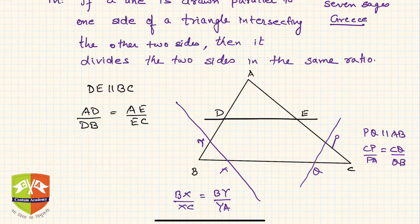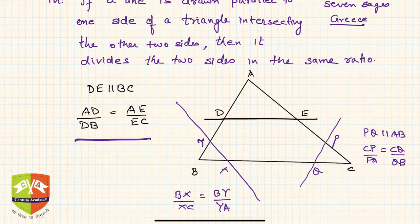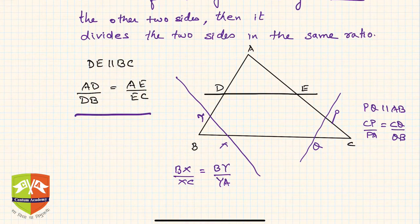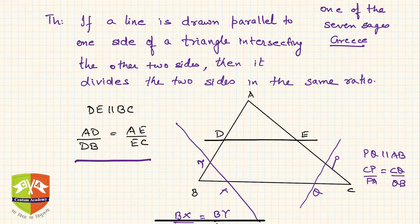So there are three possible parallel lines to the sides of the triangle, each intersecting the other two sides. In each case the result holds: CP/PA = CQ/QB, AD/DB = AE/EC, and BX/XC = BY/YA. Now let us see the proof of Thales' theorem.